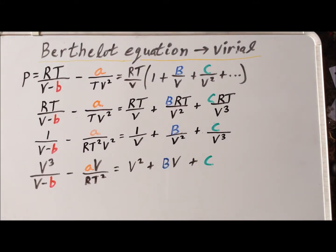Next, we multiply each side of the equation by V cubed, the volume to the third power, and we get V cubed divided by V minus B minus AV divided by RT squared equals V squared plus BV plus C.